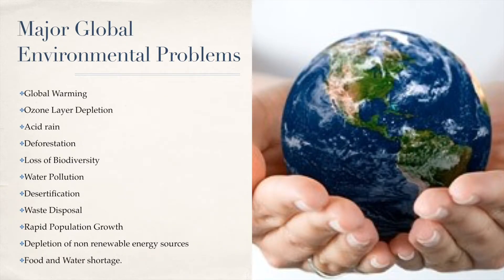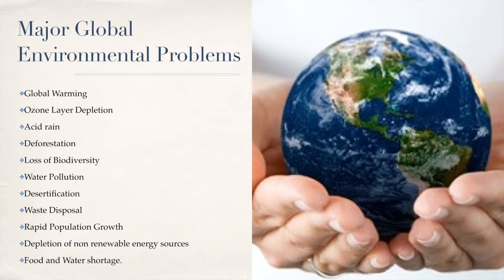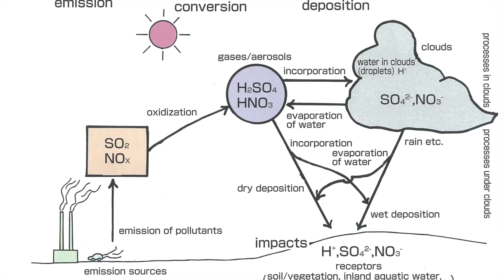There are many global environmental problems. Some of them include global warming, ozone layer depletion, acid rain, deforestation, loss of biodiversity, water pollution, desertification, waste disposal, rapid population growth, depletion of non-renewable energy sources, and food and water shortage. This is only a small list — there are many more global environmental problems.